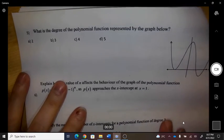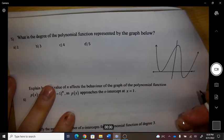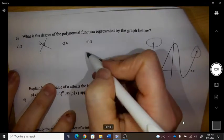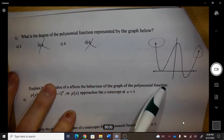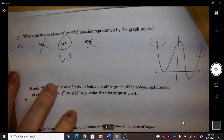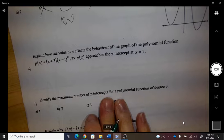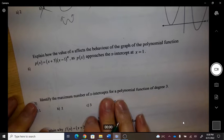What is the degree of this? We have same arrows, so it can't be odd, and it's a W shape, so it is fourth degree. Explain how the value of n affects the behavior of the graph of the polynomial